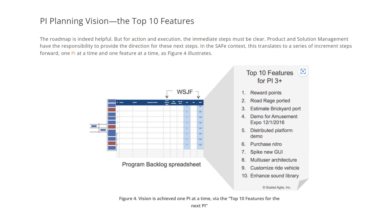You can prioritize the program backlog using WSJF — Weighted Shortest Job First. Each PI objective should talk about the top 10 features we are going to achieve in that particular program increment. This picture talks about the top 10 features in Program Increment 3.